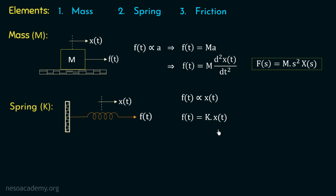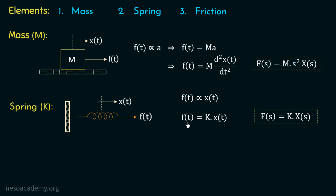We discussed this equation in the previous lecture. Now if we apply Laplace transform on both sides, we get f of s equal to k multiplied with x of s, where x of s is the Laplace transform of x of t and f of s is the Laplace transform of f of t. This is the force equation for a spring when we apply a force f of t and the displacement is x of t.